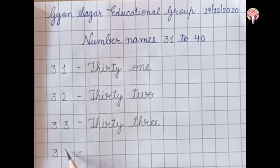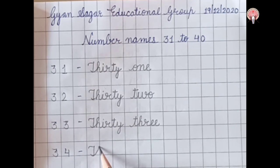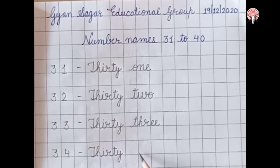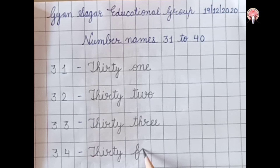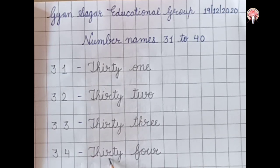3, 4, 34. Thirty, T-H-I-R-T-Y, 30. Four, F-O-U-R, 4. 34.